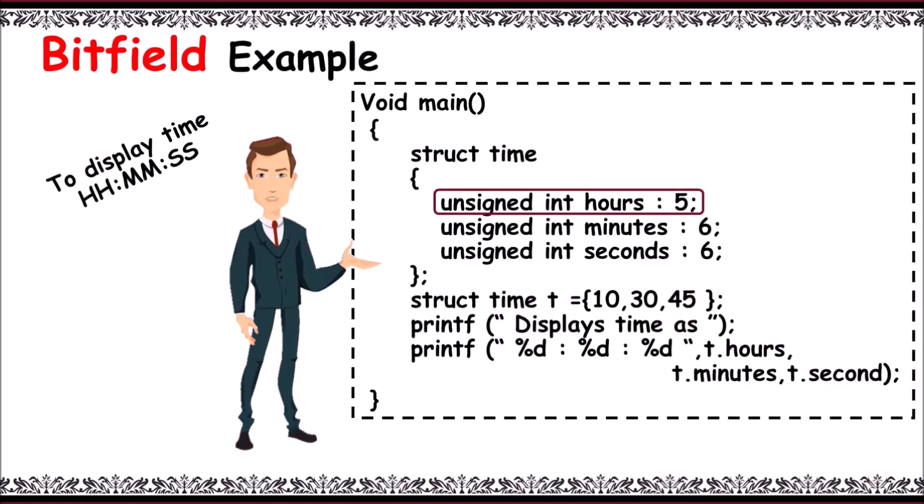Next, unsigned integer minutes colon 6, that is 0 to 59 value can be represented using 6 bits. Next, unsigned int seconds 6, the same 0 to 59 value can be represented using 6 bits.